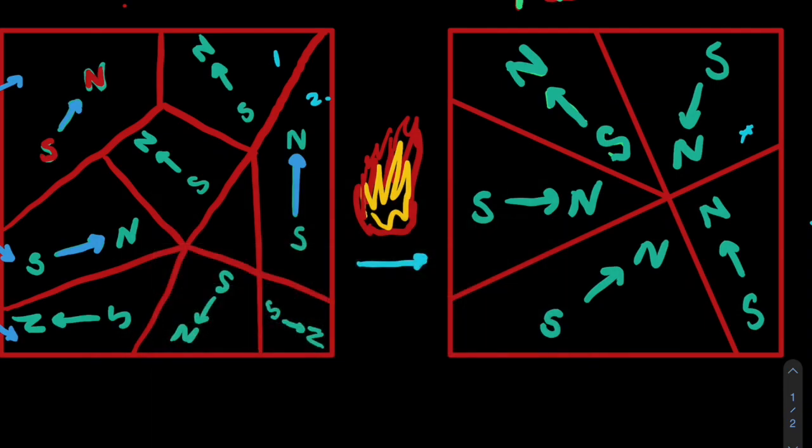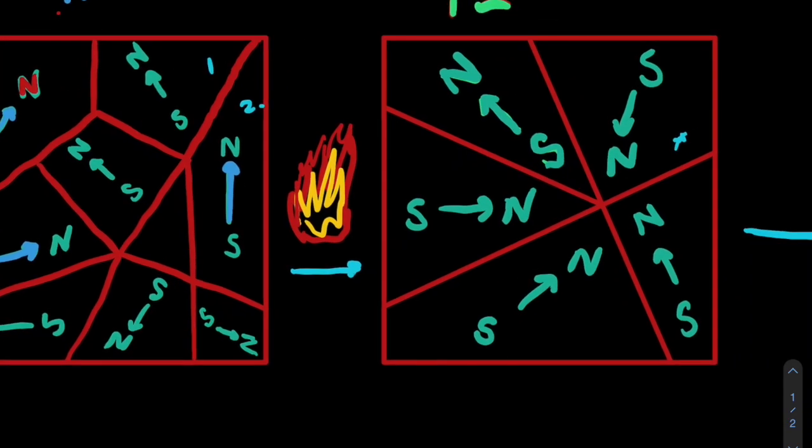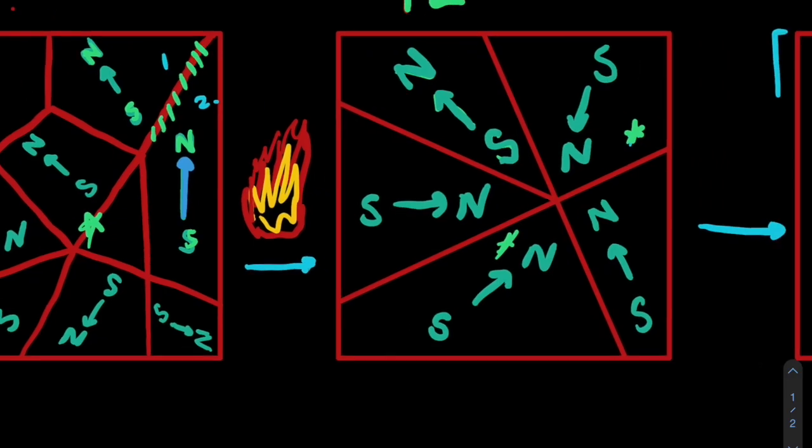So we're running this in the presence of a magnetic field or a current. These domains here, we had a lot of domains here and here and everywhere, these domains start to combine. And maybe those two domains combine into just this domain, or maybe these domains over here combine to form this domain.